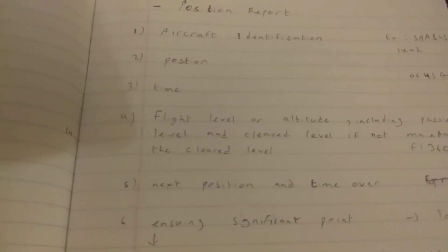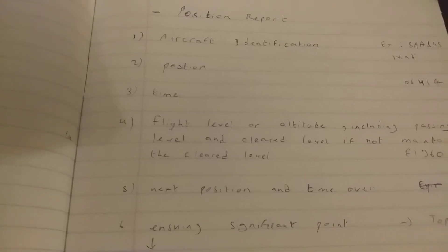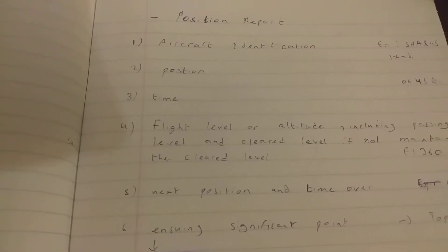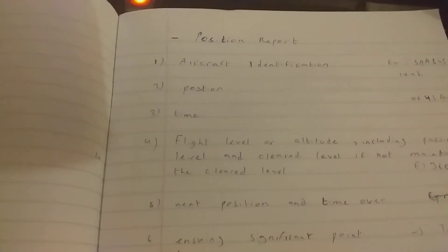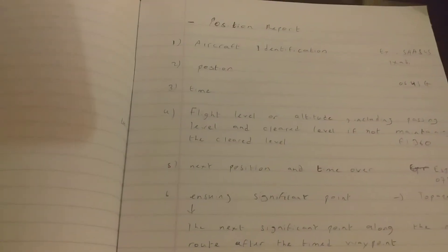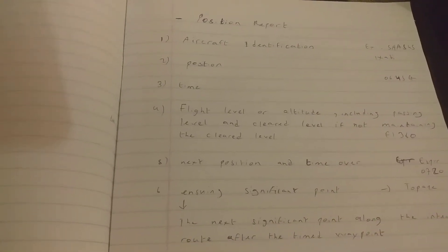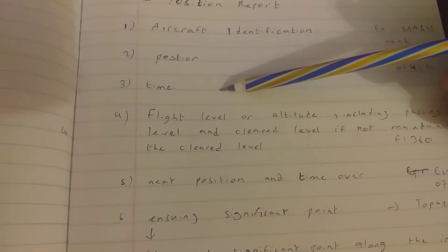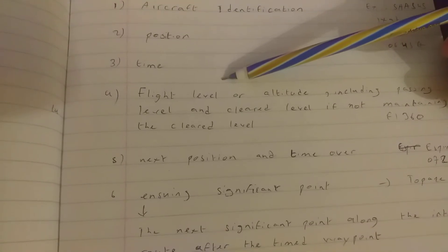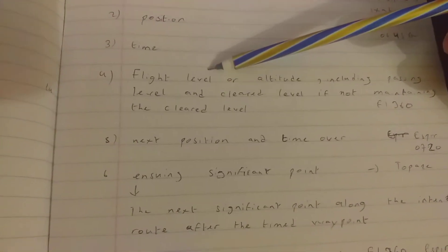Hi guys, today we will be taking a look at position report. What do we need to include in a position report? So there are six components of a position report. The first one is the aircraft identification, the second is the position, the third is time over, the fourth is flight level or altitude or past or clear level or passing level.